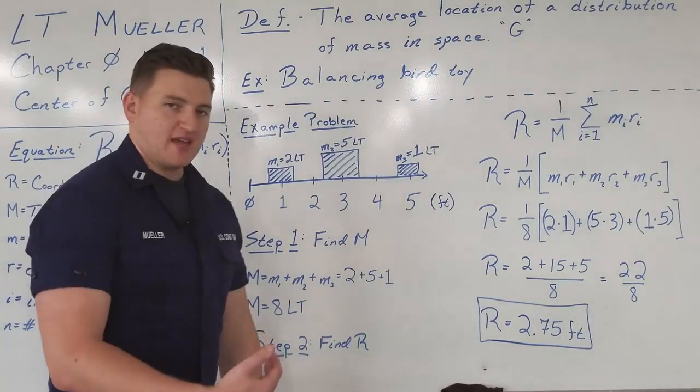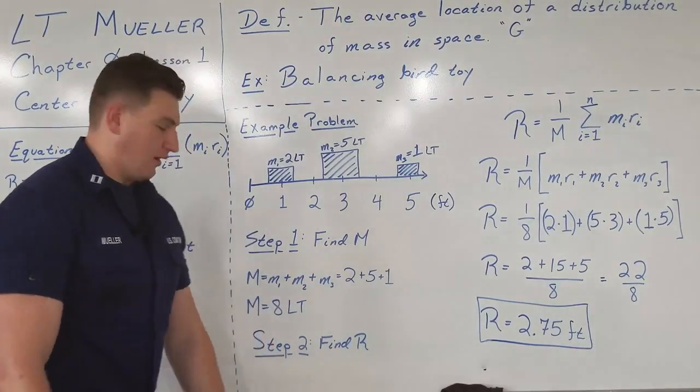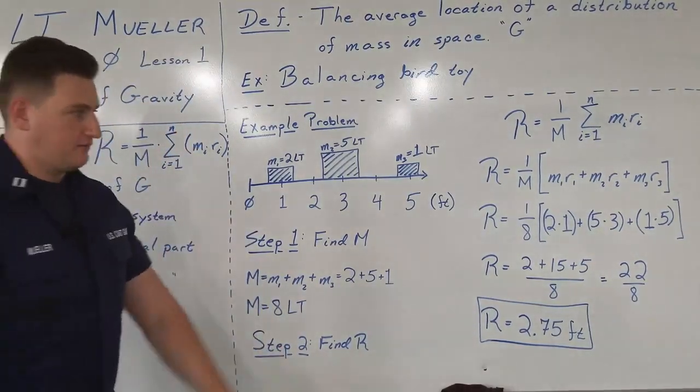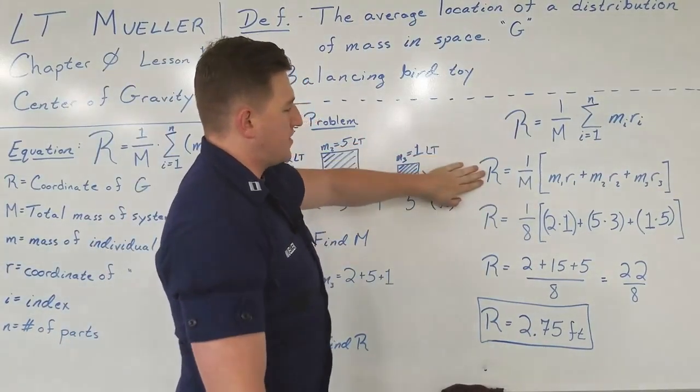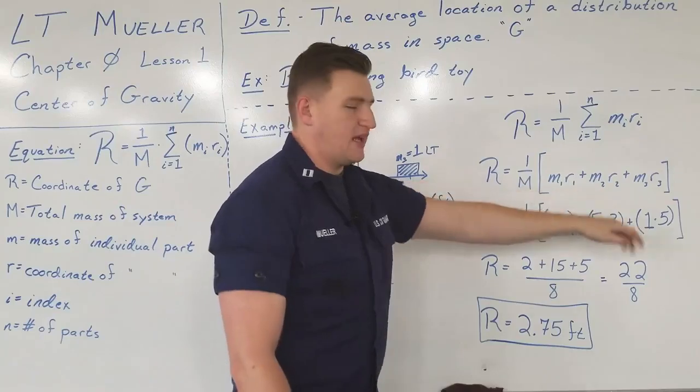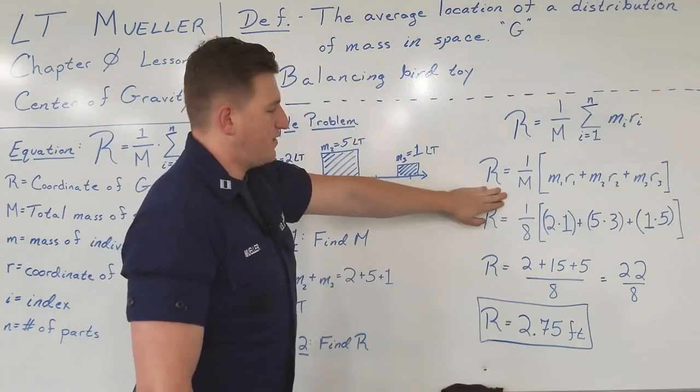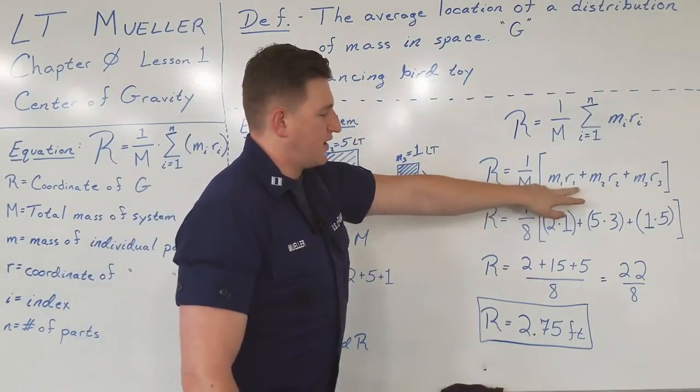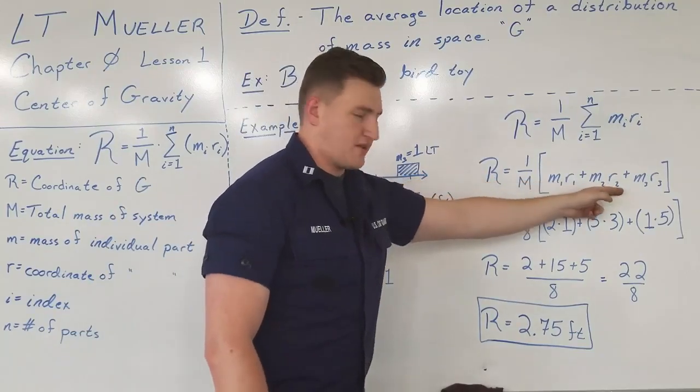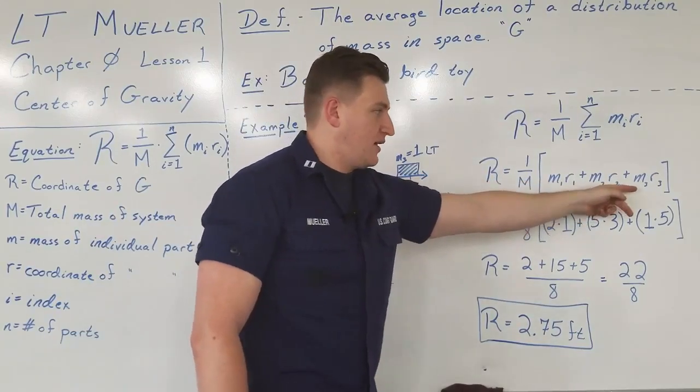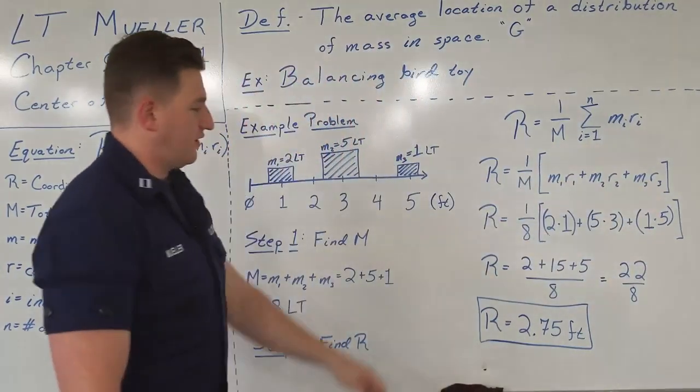Now we know everything except for what we're trying to find, capital R. So step two is to find R. I've rewritten the equation, like I said before. Now I just expanded out the summation, showing each individual index. With this equation, we have the expression for index equals one, right here, plus the index equals two expression here, and then the index equals three expression right there at the very end.